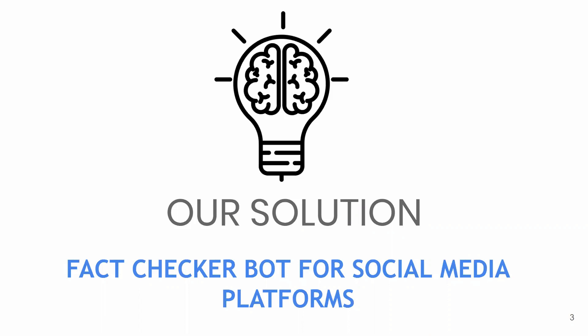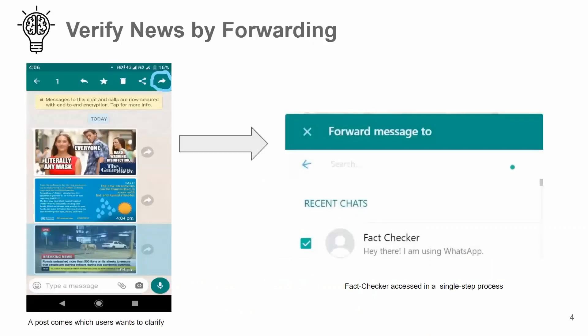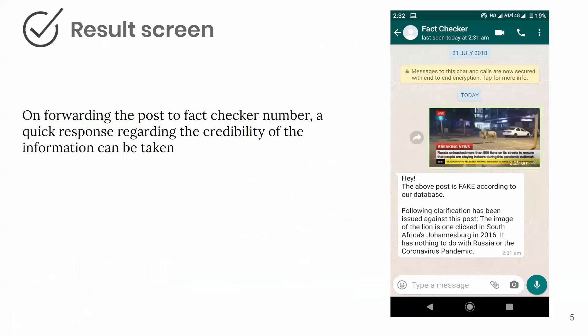Let me walk you through the prototype. This is a WhatsApp interface. Let's say I am the user and I am suspicious about one of the articles I have received. I want to check it — I press and hold the article, in this case the third article, and forward it to the fact checker. I almost immediately get a text response from the fact checker whether the article is real or fake, along with an explanation.